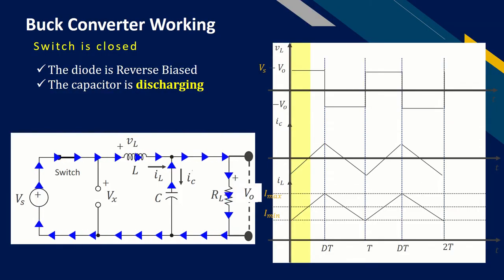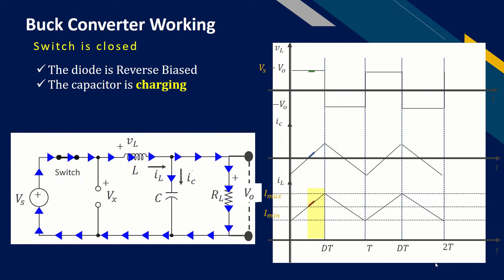Consider the first part when the capacitor current is negative which means capacitor is discharging giving current to load because inductor current is small and not enough to fulfill the load current requirement. But as the inductor current is increasing continuously, the time comes when the inductor current is sufficient to provide it to load, plus charge the capacitor. Which is part 2, when the capacitor current is positive.